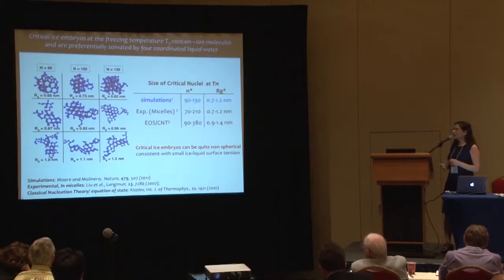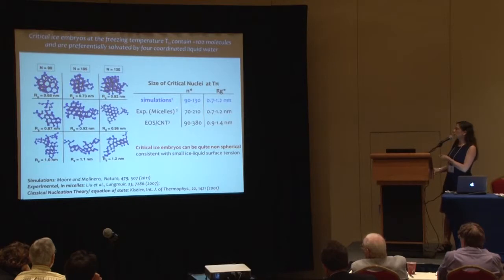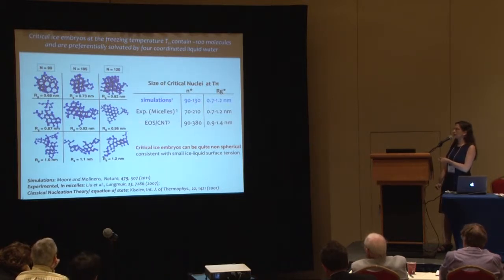Looking at the critical nuclei — those at the top of the barrier that allow crystallization — at a temperature essentially the same as TH, the nuclei are not spherical; they are quite whimsical in shape and mostly coated in four-coordinated liquid. The four-coordinated liquid embedding these small crystallites must be considered part of the critical reaction coordinate for nucleation of ice. Comparison with simulations, experiments on micelles, and classical nucleation theory all fall in the same ballpark: nuclei have a diameter of about two nanometers at the critical size at TH.